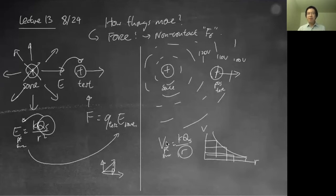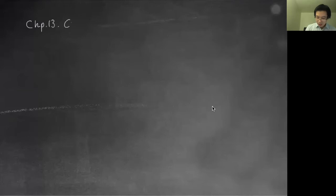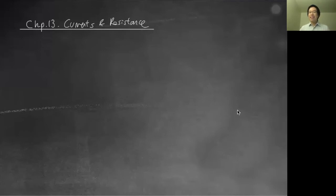Hopefully one takeaway from homework is that potentials are much easier to deal with. If you put three point charges and ask what's the potential at some point, that's much easier than dealing with vectors. Now this week we take this idea and look at concrete applications: how do we build electric circuits? We'll introduce new terminologies. This is chapter 13 — currents and resistance. Today we go through the basics of how a circuit works, tomorrow covers more complicated circuits.